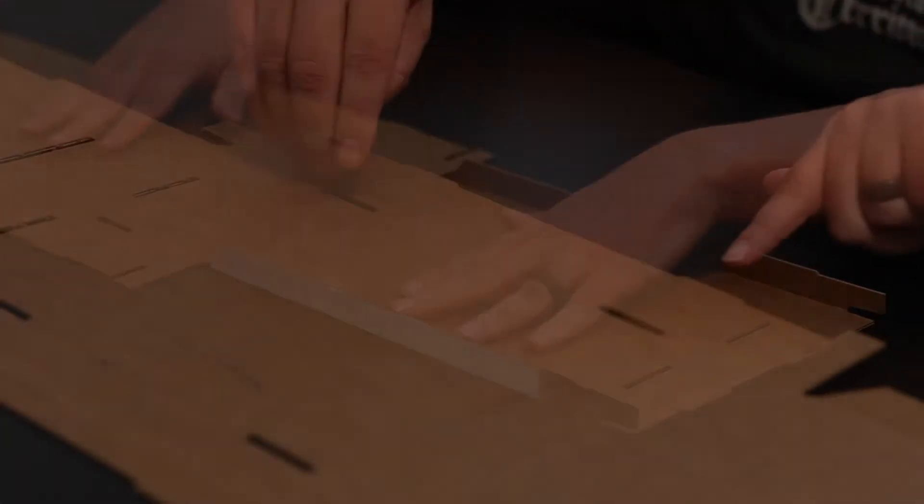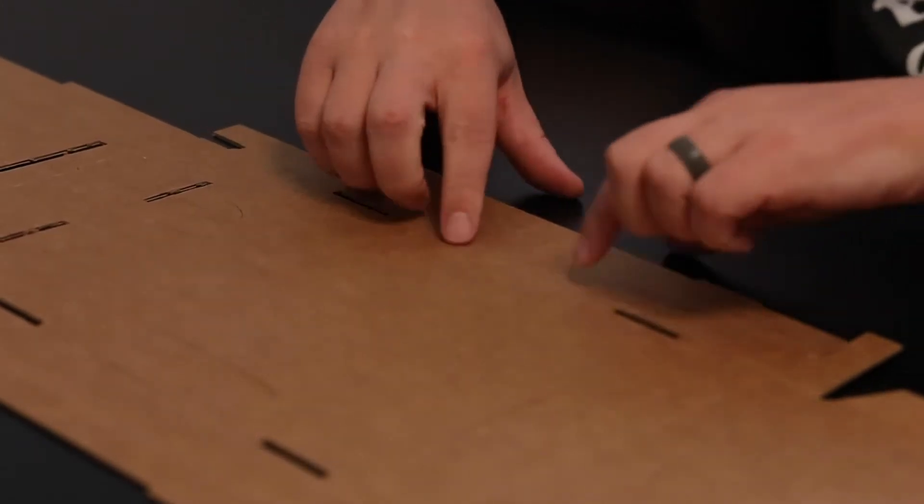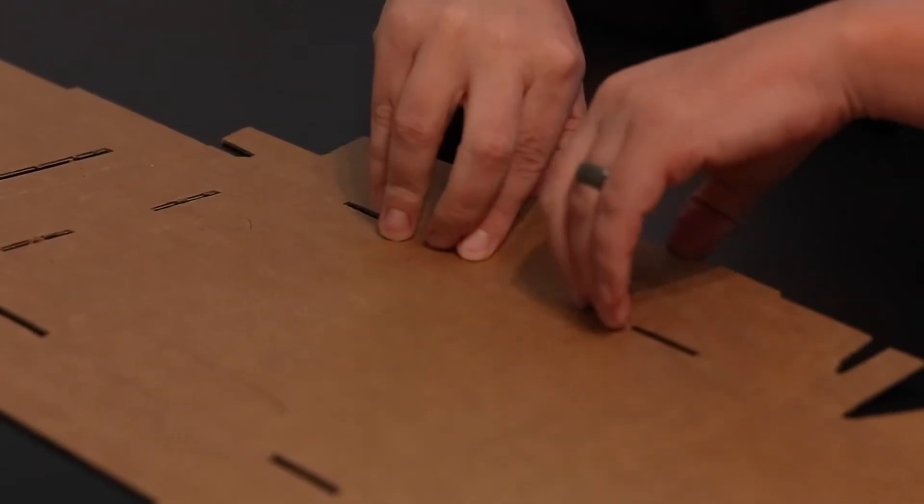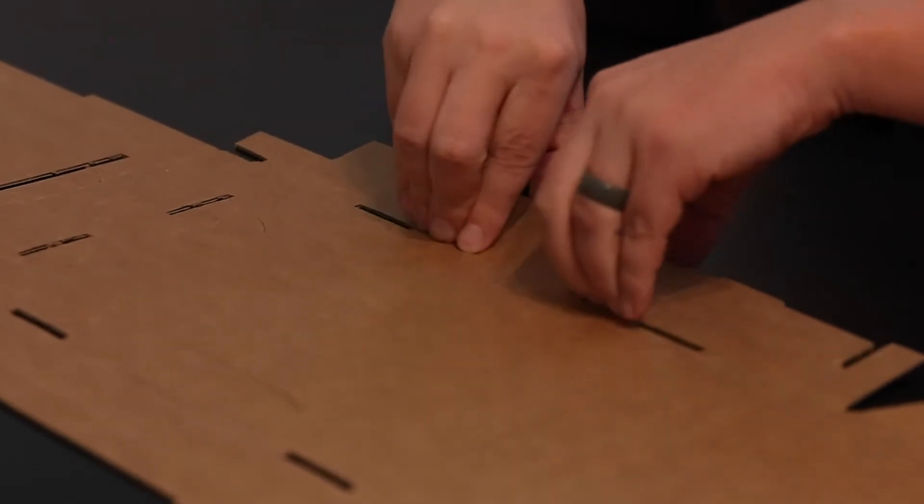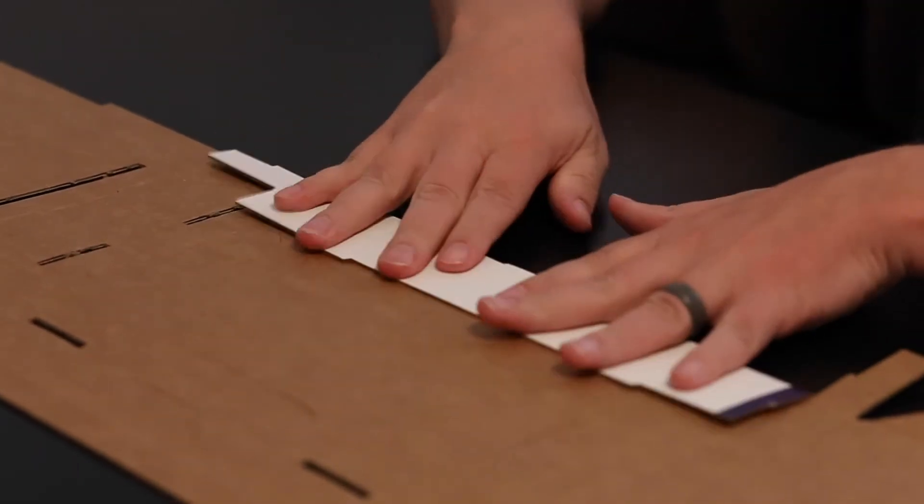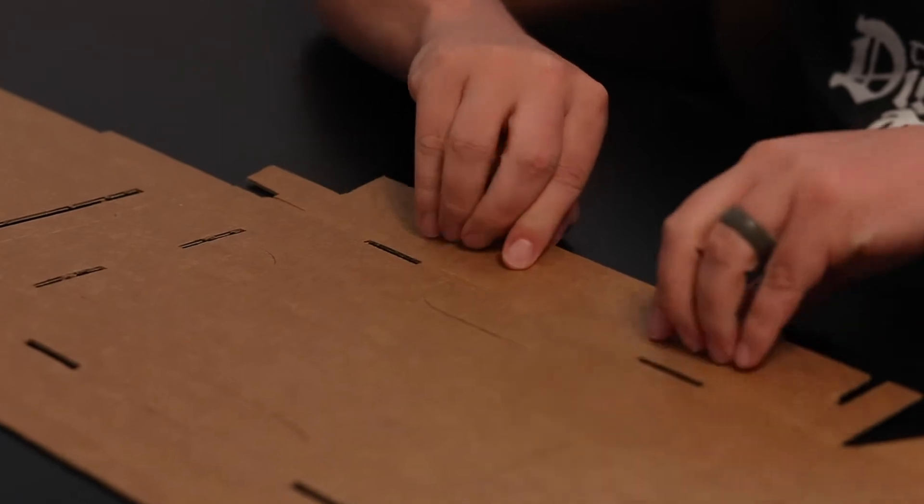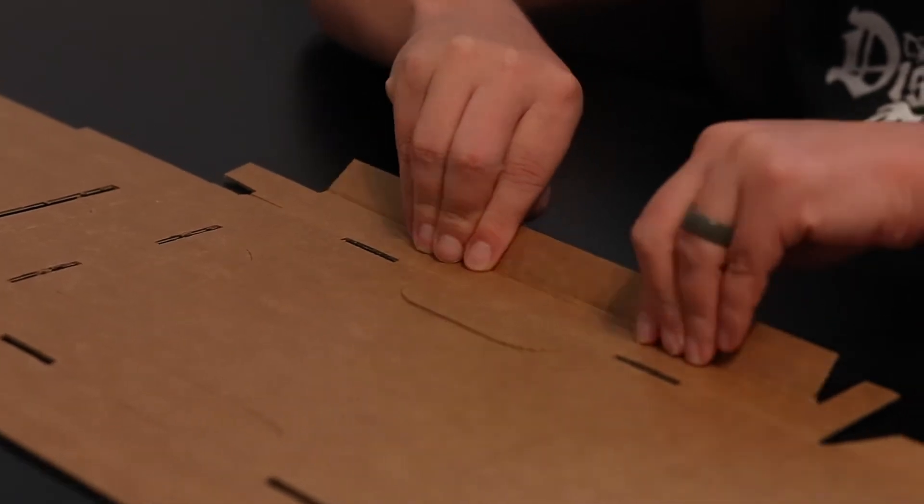The center section has three scores per side. You want to be sure and keep pressure on the bottom center and fold over. Next you fold the roll over. There are two scores here. You want to fold the inside score first, then roll it over.